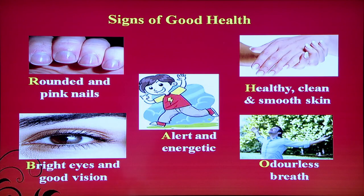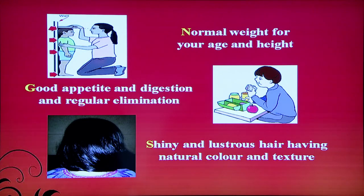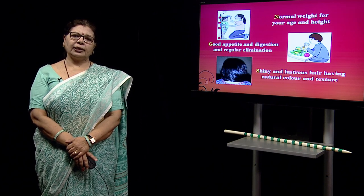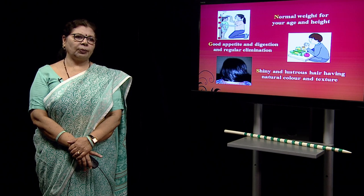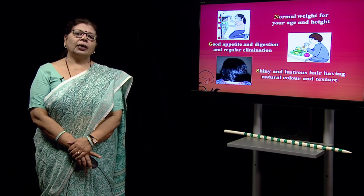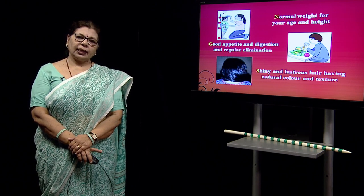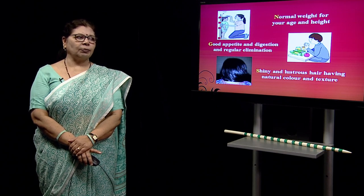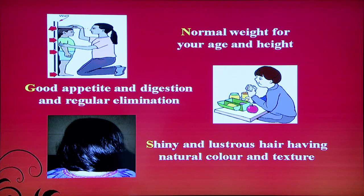Signs of physical health include rounded nails, alertness, and being energetic. Normal weight is an important index to categorize the level of health and malnutrition. The person's height and weight are measured in connection with their age. Good appetite, digestion, and regular elimination are also signs of good health.